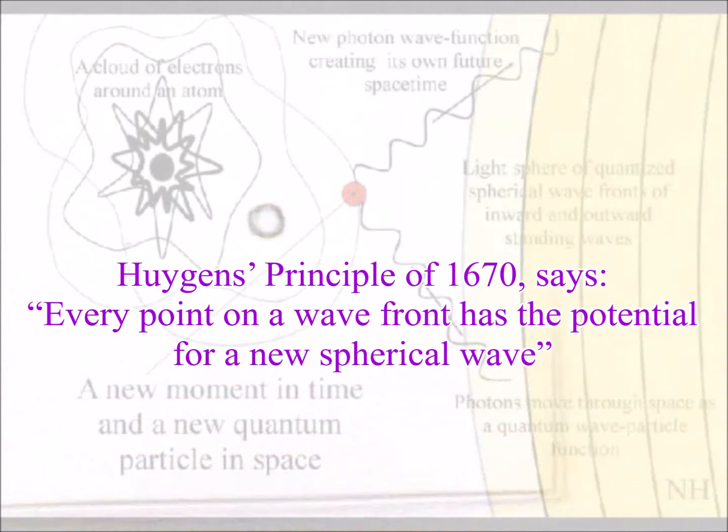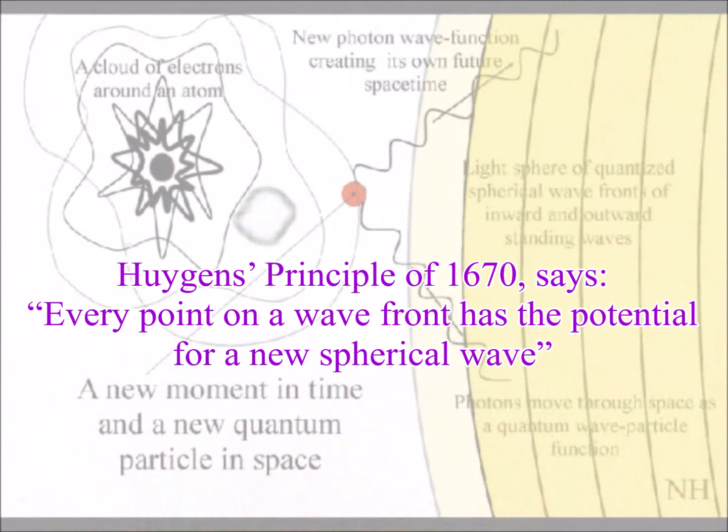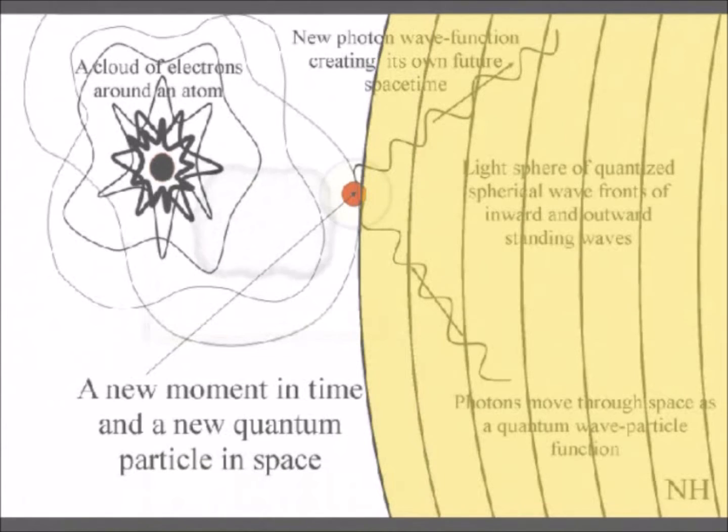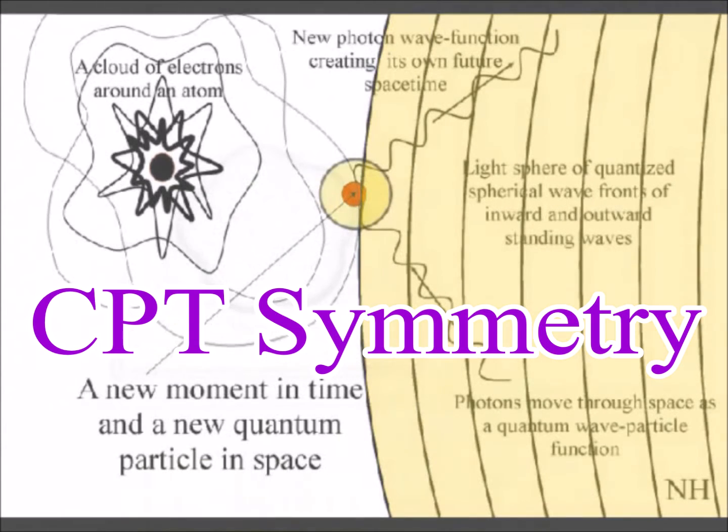When the surface of the light sphere encounters the electron probability cloud of another atom, we have the absorption and emission of light. This process of energy exchange forms a photon-electron coupling or dipole moment.